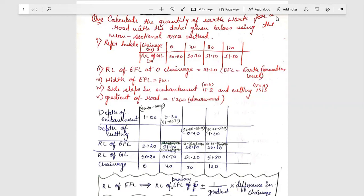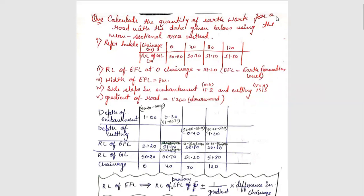The first question is about the mean sectional area method. Calculate the quantity of earthwork for a road with the data given below using the mean sectional area method. Refer to the table: EFL meaning earth formation level, width of earth formation level, and then we will discuss the side slope.